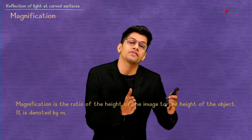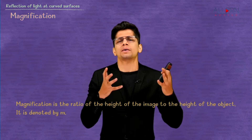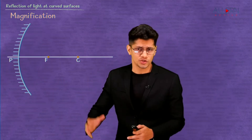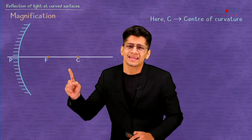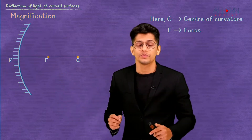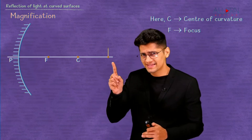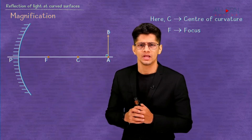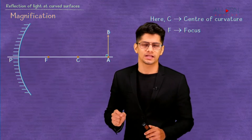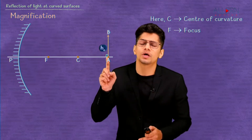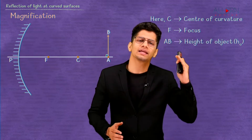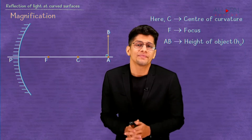Magnification is a ratio, but what is it equal to? To understand that, we need a base diagram. Here we have a base diagram for a concave mirror, where capital C is the center of curvature and capital F is the focus. We place an object AB perpendicular to the principal axis, where AB represents the height of the object, denoted by h subscript o.